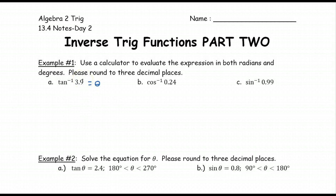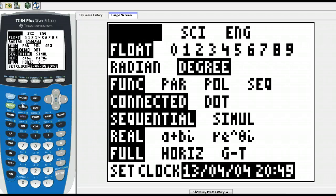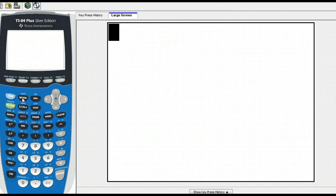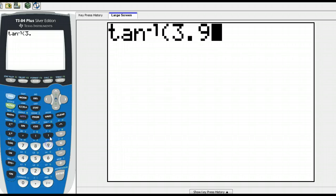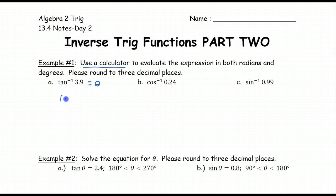We get to do this in our calculators because it says we can use a calculator. We want to do both radians and degrees so first we need to figure out what mode our calculators are in. My calculator is in degrees mode, so I'm going to do degrees first. All I have to do is type it in just like I see it: tan inverse is second tangent of 3.9. That gives me an angle of 75.619 degrees.